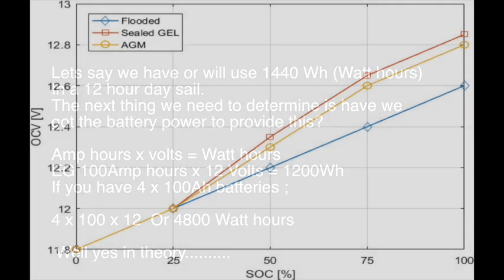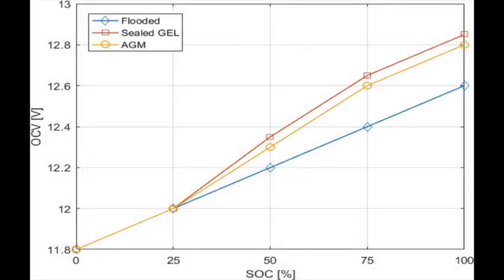However, all lead acid batteries, flooded, sealed, gel, or AGM, should never be discharged below 50% of their capacity, otherwise you risk damaging the battery.